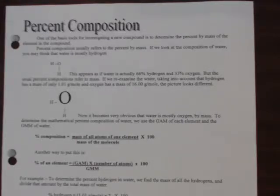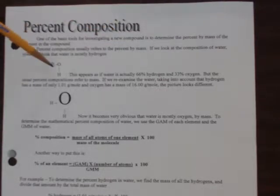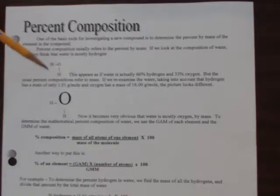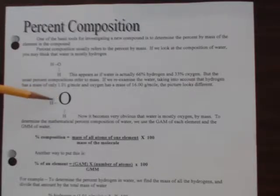You've just gone through reading this percent composition worksheet. One thing you should have noticed is that percent composition is typically referring to percent by mass. We have two H's and one O in water, and you might think it's two-thirds or 66% hydrogen, but since oxygen is so much bigger than the hydrogens, most of the mass is the oxygen.